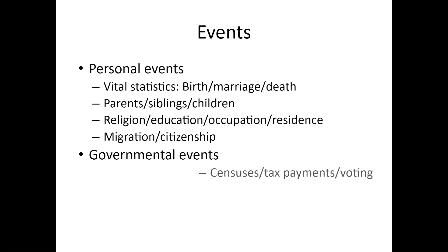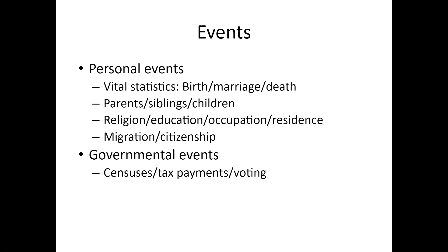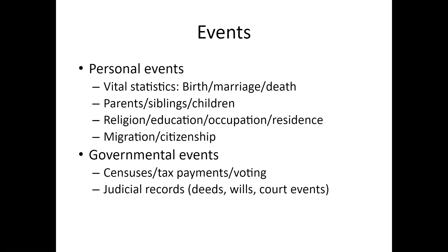Then there are governmental events: censuses every ten years, tax payments which often show up in records, voting records — you can get the voting records including the party involved for Californians going way back. Then there are judicial records: deeds, wills, court events of various kinds. Military: people had to register, people served, people got pensions. Women do not show up as frequently in the military category, although by World War II there were a lot of women in the military. But they do show up earlier as widows getting pensions.